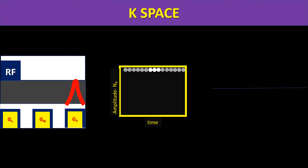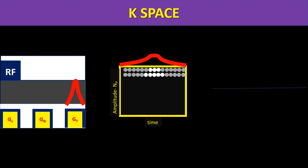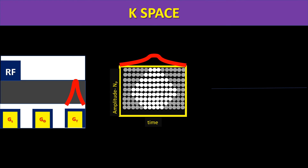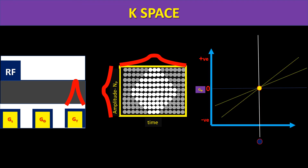As we go to the middle of k-space, the signal is maximum because that's where all protons are in sync, giving maximum signal. From one end to the other, it is always the center of k-space that has maximum amplitude. Similarly, from top to bottom, the center also has maximum amplitude.